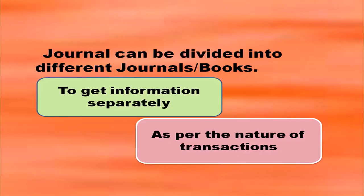You have studied journal, and journal can be divided into different books or different journals. Why we are dividing? In order to get information separately we are dividing journals. In the case of purchases book you will get all information relating to purchase in the same book. In the case of sales book you will get all information relating to sales in that particular book itself. So to get information separately, special books are prepared.